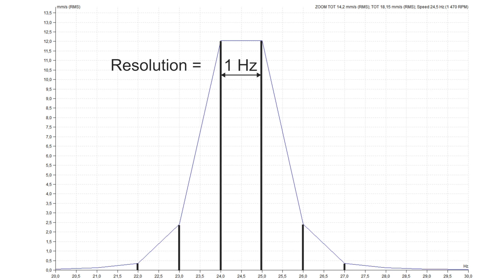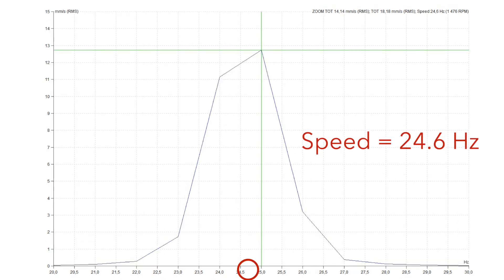But the frequency of machine vibrations may have an unlimited number of values. For example, the machine speed frequency is 24.6 Hz. But the spectrum contains lines on 24 Hz and 25 only. We get this shape of spectrum — the peak is on 25 Hz, which is the nearest line.